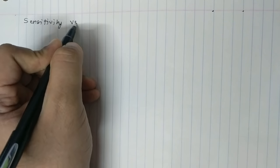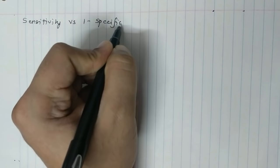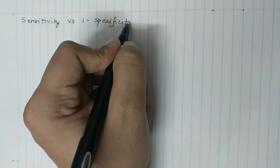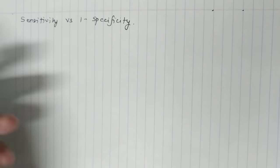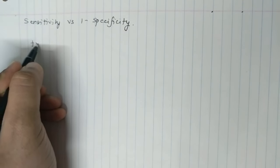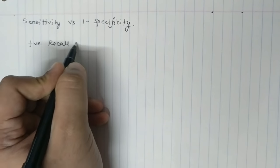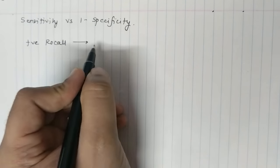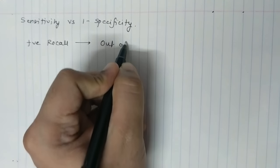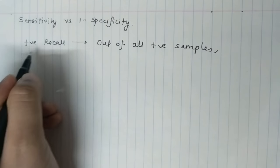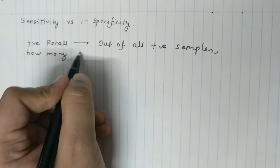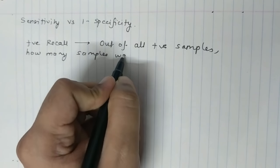AUC-ROC curve is basically the plot of sensitivity versus one minus specificity. What are these terms? These are complex terms for simple concepts. Sensitivity is nothing else but your positive recall. Recall is basically out of all positive samples, how many samples was my classifier able to pick up?